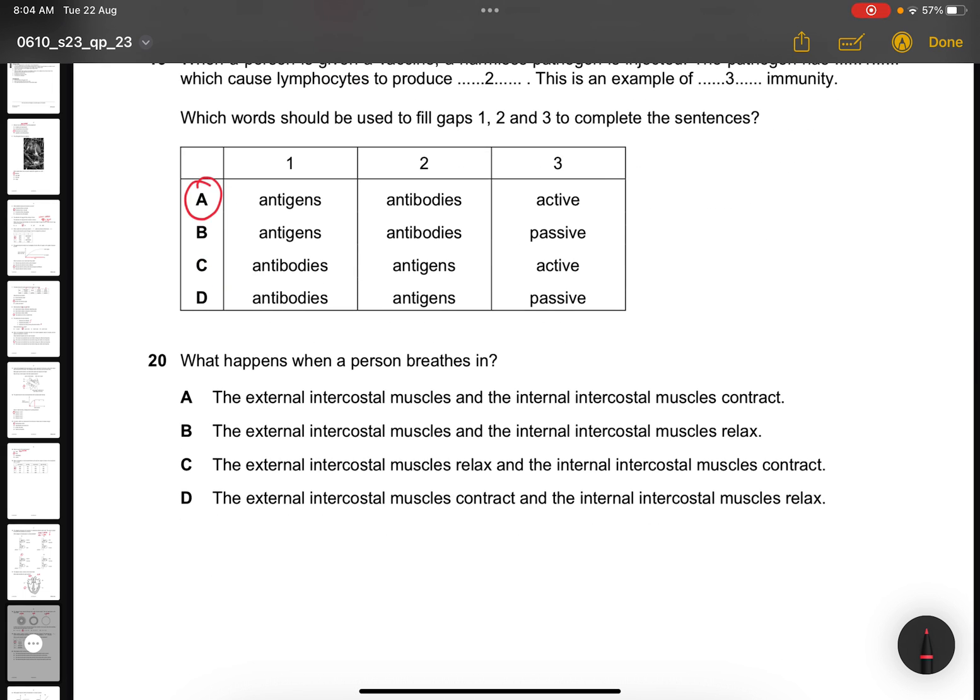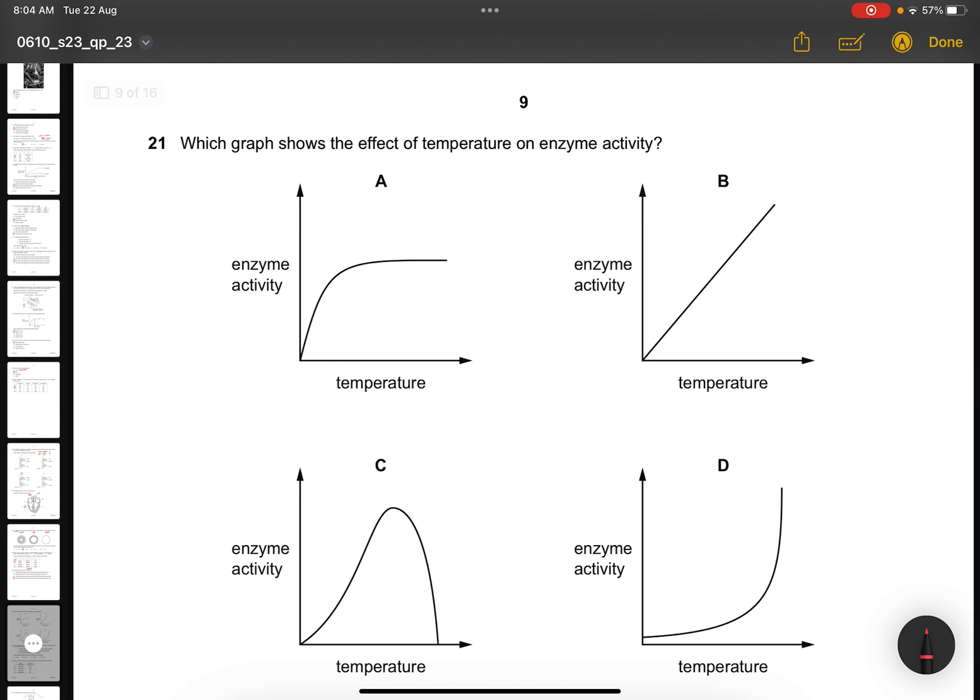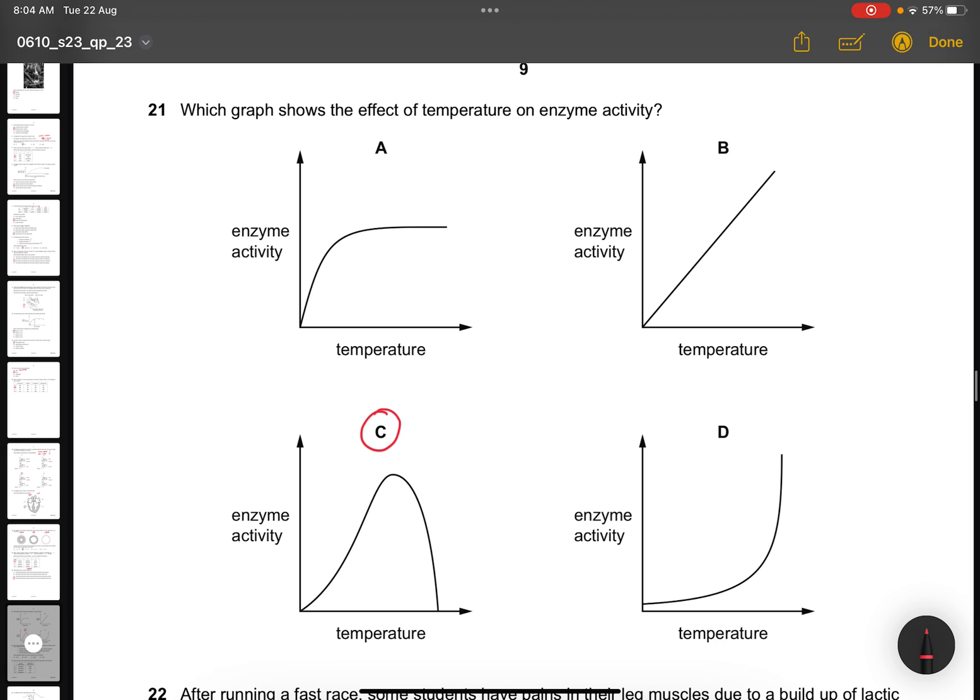Question 20. What happens when the person breathes in? This is a process of inspiration. You should be familiar with this. The external intercostal muscles will contract and the internal intercostal muscles will relax. So the answer is D. Question 21. Which graph shows the effect of temperature on enzyme activity? This is straightforward. You must know that the graph looks like C where it goes up in a peak. There's one peak here and then it goes down and begins to denature.